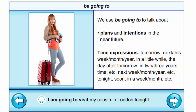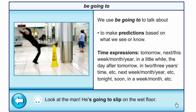We use be going to to talk about plans and intentions in the near future. Time expressions: tomorrow, next week, month, year, in a little while, the day after tomorrow, in two or three years, tonight, soon, in a week, in a month, etc. Example: I am going to visit my cousin in London tonight. Also to make predictions based on what we see or know. Example: Look at the man — he's going to slip on the wet floor.